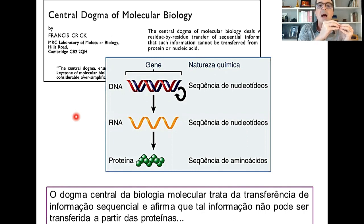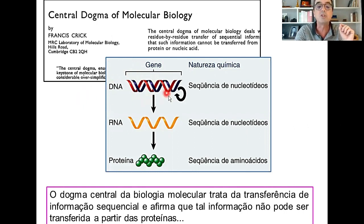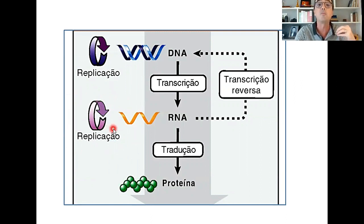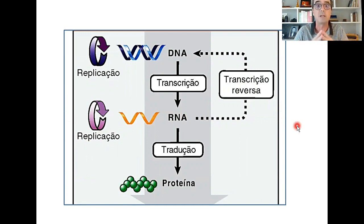O dogma central refere-se à forma de transferência de informação — não é uma transferência de matéria, tampouco de energia — uma transferência de informação de DNA para RNA e de RNA para proteína. No entanto, logo pesquisadores começaram a ver que, além dessas etapas previstas pelo modelo de Crick, havia outros mecanismos também que começaram a ser observados, como o RNA gerando mais RNA através de uma replicação e como o RNA podendo dar origem a DNA através de um processo chamado transcrição reversa.